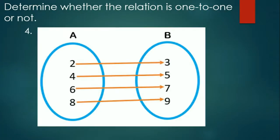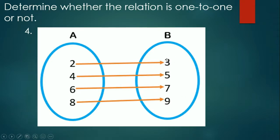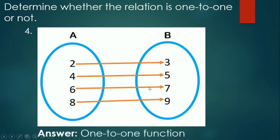Fourth item: 2 is paired to 3, 4 to 5, 6 to 7, 8 to 9. Each element of A has exactly one arrow going out, and each element of B has exactly one arrow coming in. So definitely it is a function and it is a one-to-one function.